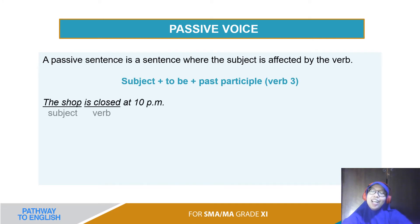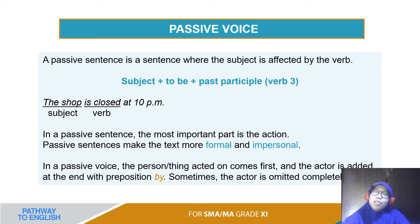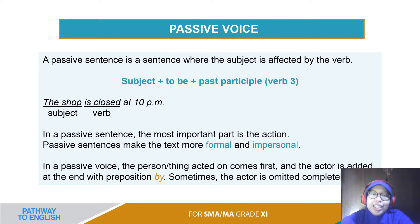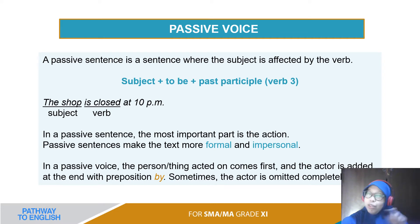Oke, this is about passive voice. Passive voice sentence is a sentence where the subject is affected by the verb. Jadi passive voice itu adalah suatu kalimat yang subjeknya berpengaruh pada katanya — affected by the verb. Subject plus to be plus past participle — ini dalam konteks passive voice. Karena untuk passive voice, semua verb yang digunakan adalah verb 3, bukan verb 1, bukan verb 2, apalagi verb ing, tapi verb 3.